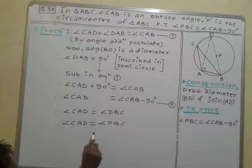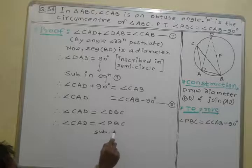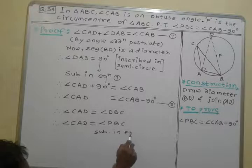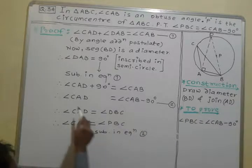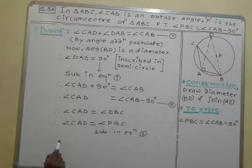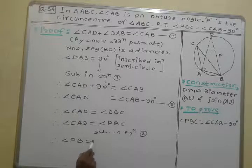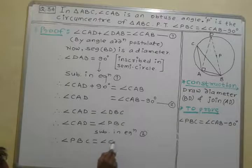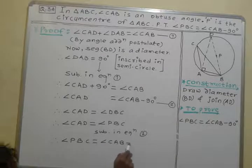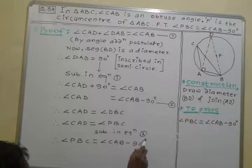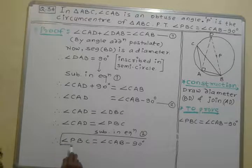I will put this value, substituting in equation 2. Therefore, angle PBC is equal to angle CAB minus 90 degrees. This is our actual statement to prove.